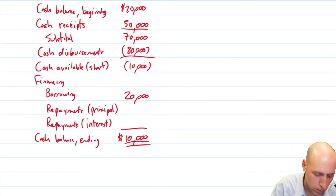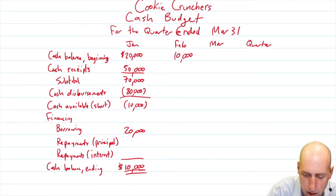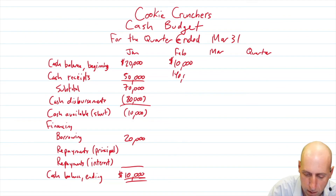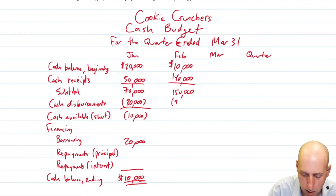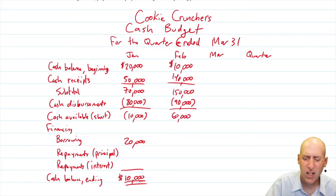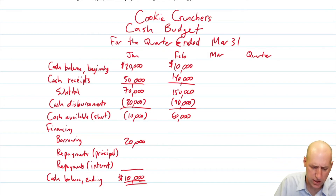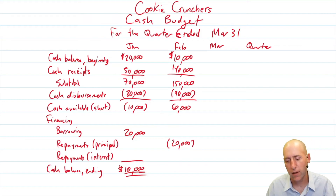So our ending cash balance after that borrowing: negative 10 plus 20 is $10,000. We end January with $10,000 in cash, which means we start February with $10,000 in cash. Good news for cash flow in February: we have $140,000 come in — 10 plus 140 is 150. And we only see $90,000 go out, meaning we're sitting here with a $60,000 cash balance. It's implied that if we can repay, we should repay. We have $60,000 extra available to pay back this debt, so we're going to pay back the $20,000 principal — but we've got to figure out the interest.